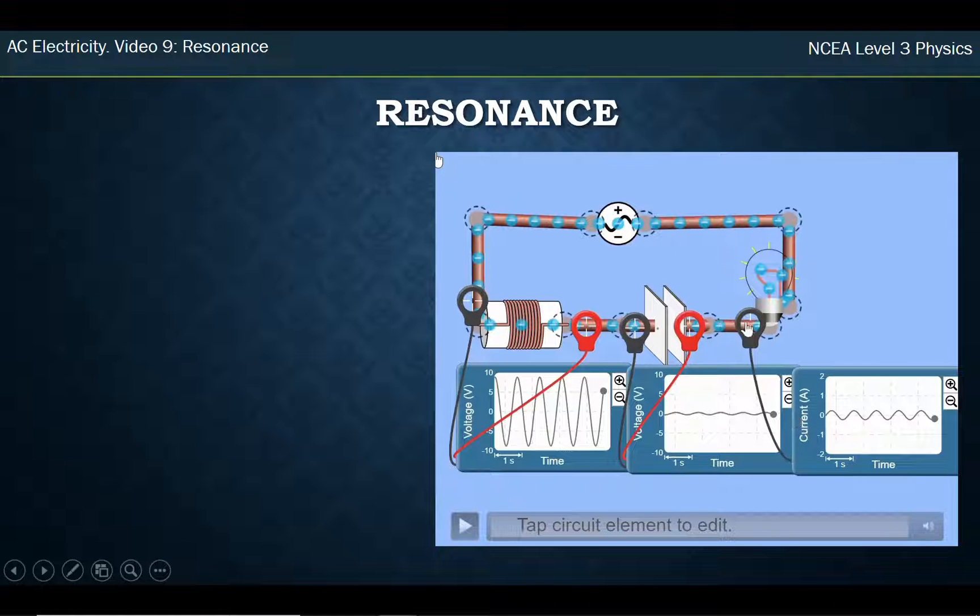I'm measuring the current in this one here and I want to see where that gets maximum. When the bulb's brightest is when I can get the current amplitude to be as high as possible.